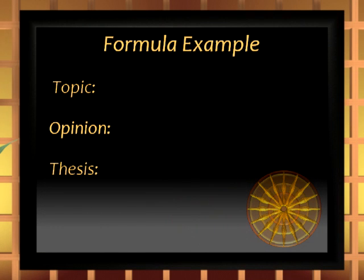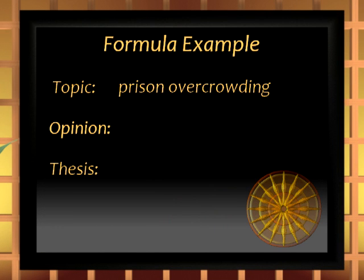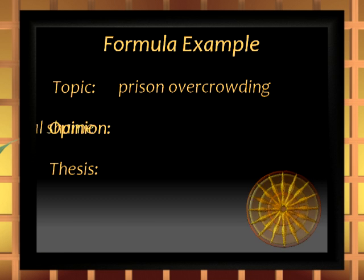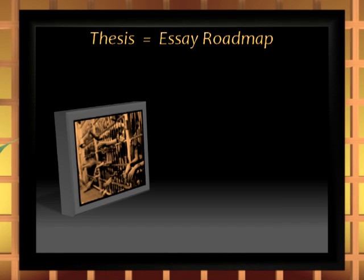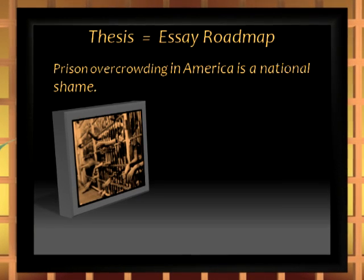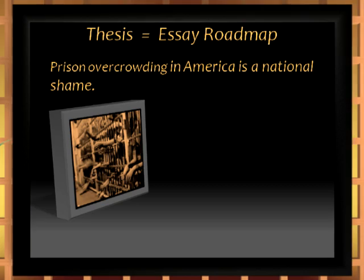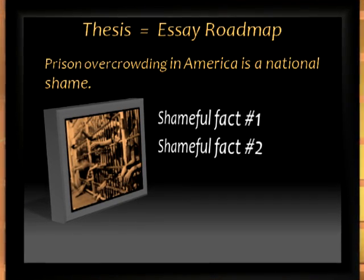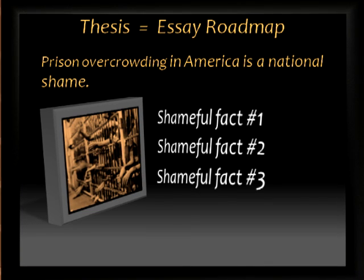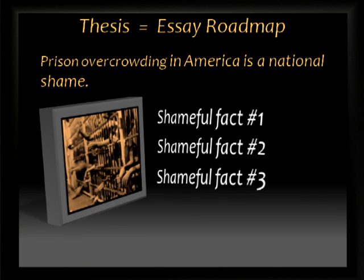Let's begin with the topic already presented, which was prison overcrowding. Our opinion? A national shame. We combine those two into a sentence to create our thesis: prison overcrowding in America is a national shame. Now that thesis clearly predicts what must follow in the essay. The writer will have to talk about shameful fact number one, shameful fact number two, and shameful fact number three in order to justify the thesis that prison overcrowding is a national shame.